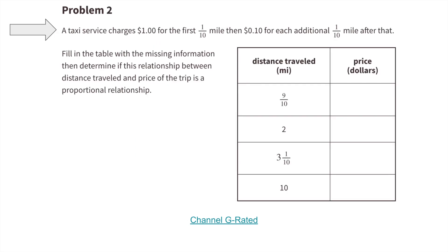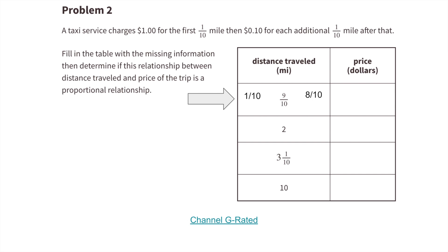A taxi service charges $1.00 for the first one-tenth of a mile, then $0.10 for each additional one-tenth mile after that. When the distance traveled is 9-tenths of a mile, that's 1-tenth plus 8-tenths. The first tenth costs $1.00, and the 8-tenths equals 8 dimes or $0.80. So the taxi charges $1.80 to go 9-tenths of a mile.